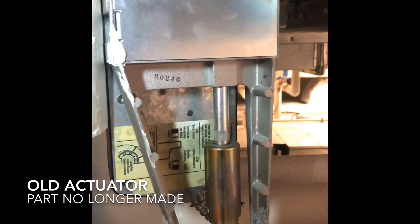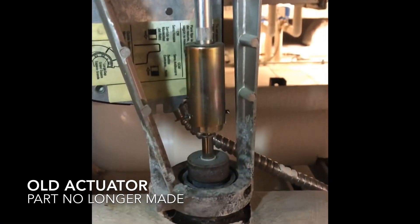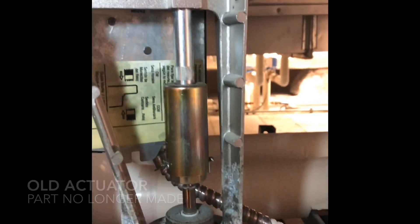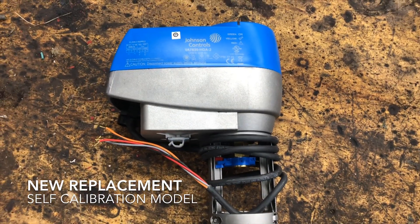Here we have a failed actuator assembly on a Johnson controlled three-way globe valve. It is stuck in the up position. Here's our new actuator.